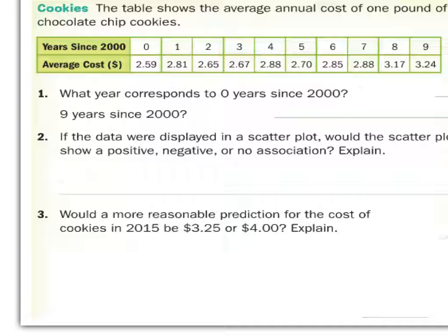All right. Since the year 2000, notice these years up here are just talking about the number of years since 2000. So, what year was it in year zero? 2000. Very good. What year was it in the ninth year here? 2009. So, what year corresponds to zero years since 2000? Well, it's 2000.